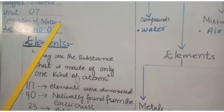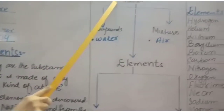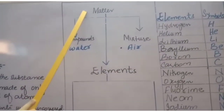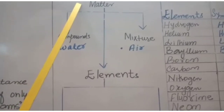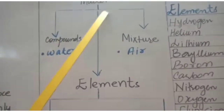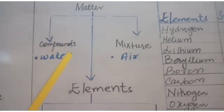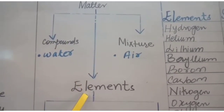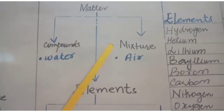What is matter? Anything which has weight and occupies space is known as matter. Matter is further classified into elements, compounds, and mixture.